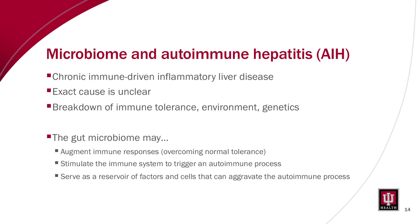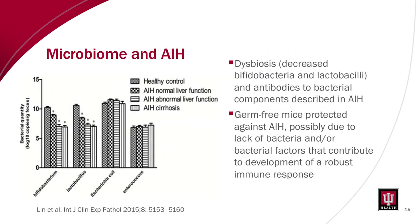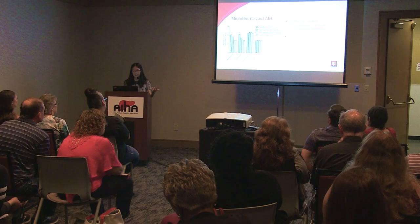A study published a few years ago looking at autoimmune hepatitis and the microbiome found that certain groups of bacteria — particularly bifidobacterium and lactobacillus — were decreased in patients with AIH compared to those without, with declines correlated to severity of liver disease. Interestingly, in animal models, germ-free mice are relatively protected against autoimmune hepatitis, possibly because the lack of bacteria or bacterial factors isn't there to help drive the immune process.